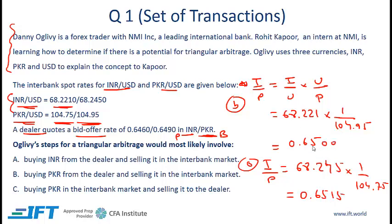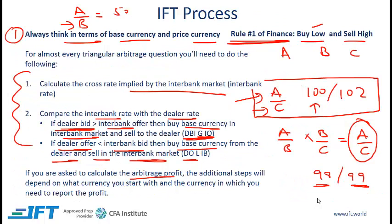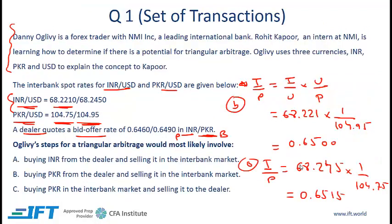Coming up with these cross rates represented step number one. Now we come to step number two: making the comparison. Is the dealer bid greater than the interbank offer? The answer is it is not. So we don't have an arbitrage opportunity there.